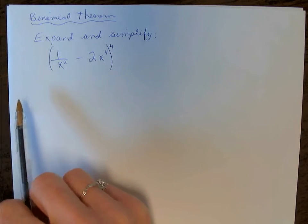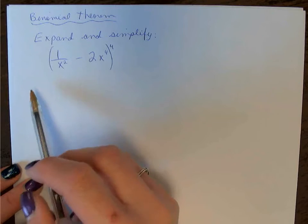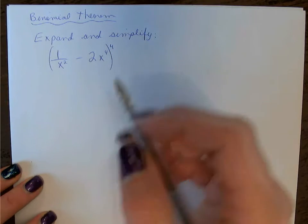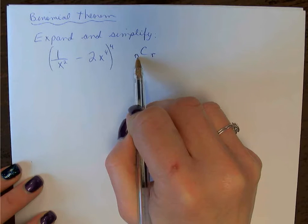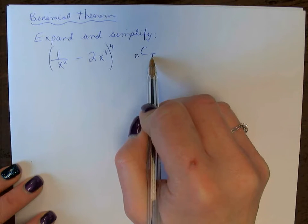We'll start with the coefficients, which we use the combinations. So we're going to have the n value of our combinations. When we look at our nCr, we're going to have our n value 4 each time, and we're going to count from 0 to 4 on our r value.